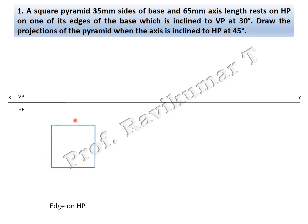The first condition is edge on HP. If you are looking from the top of the object, the complete diagonal lines are visible — it looks like a square. The diagonal lines are visible and naming is A, B, C, D. The apex is taken as O and O1. This is the top view of the object.